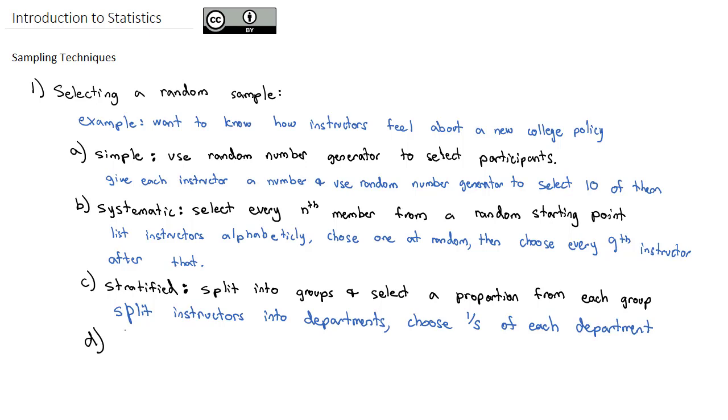Another way we can work with groups, though, is with what is called clustered random sampling. Clustered random sampling also splits into groups. But then instead of selecting a proportion from each group, we select a few groups randomly and use all the members from those groups.